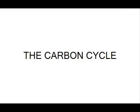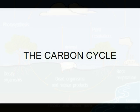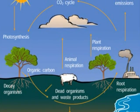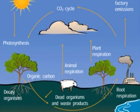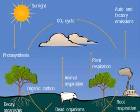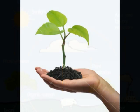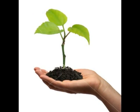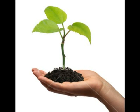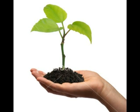The Carbon Cycle. The carbon cycle starts with carbon in the air. The carbon is then used by plants for photosynthesis and stored in carbon compounds in the plants.